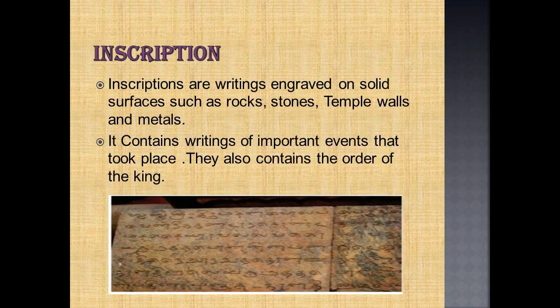First we are going to see inscriptions. Inscriptions are writings engraved on solid surfaces such as rocks, stones, temple walls and metals. The king's royal decrees, dedications and donations, monuments raised in commemoration of victories in wars, and those built in the memory of deceased warriors contain rich information about the contemporary era.